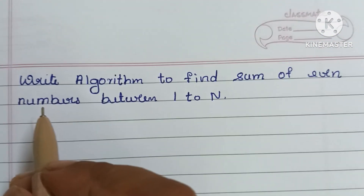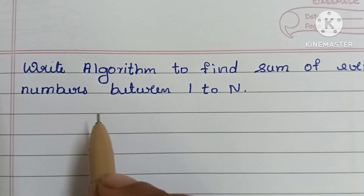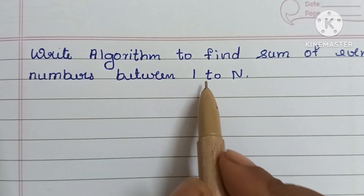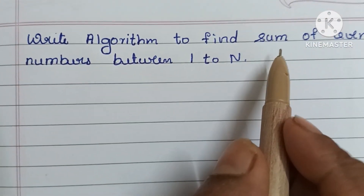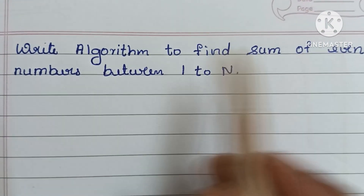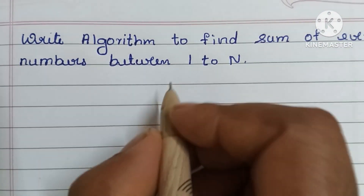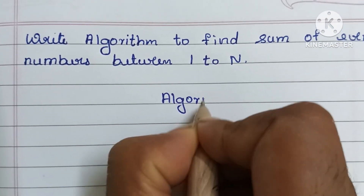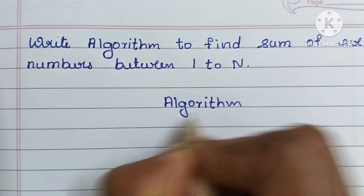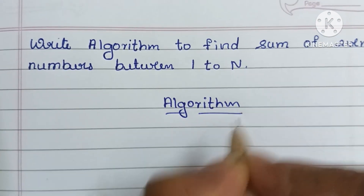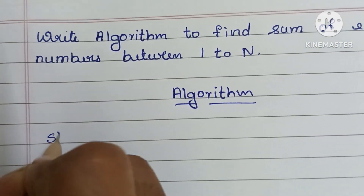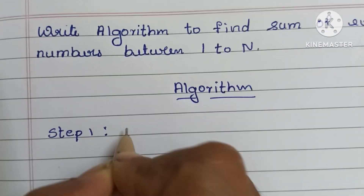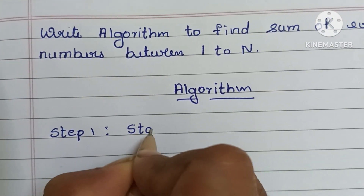Hi guys, in this video we are going to learn how to write an algorithm to find the sum of even numbers between 1 to N. An algorithm is a step-by-step process to solve a problem. Step 1: an algorithm always starts with a start statement, so first we have to write the start statement.